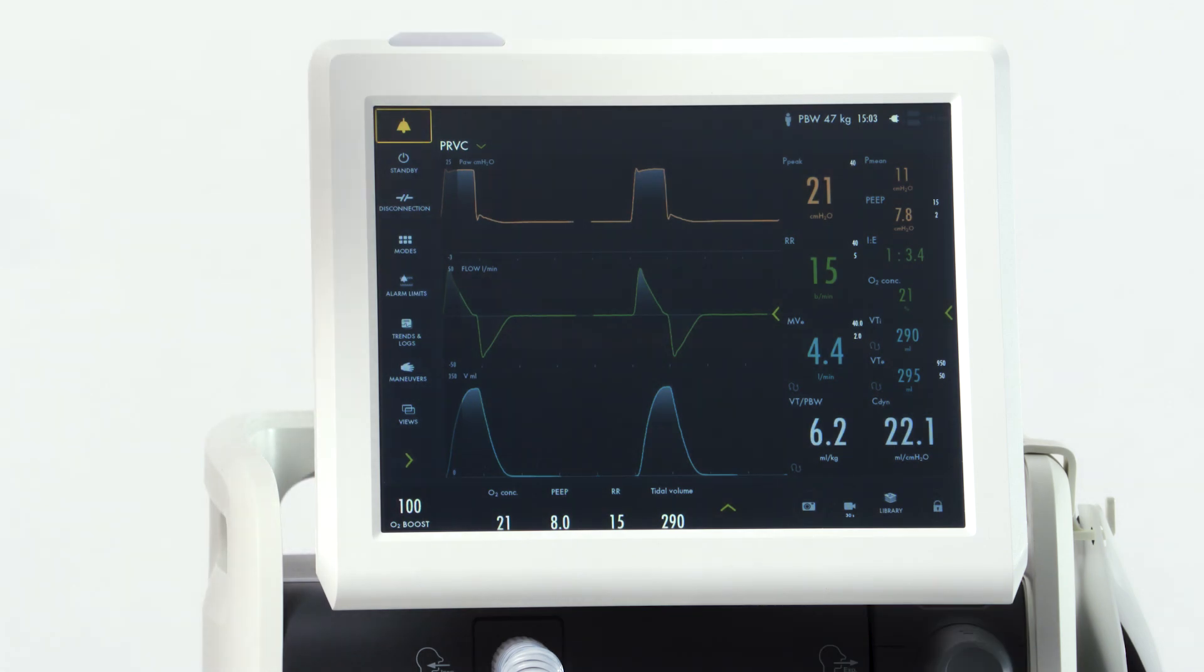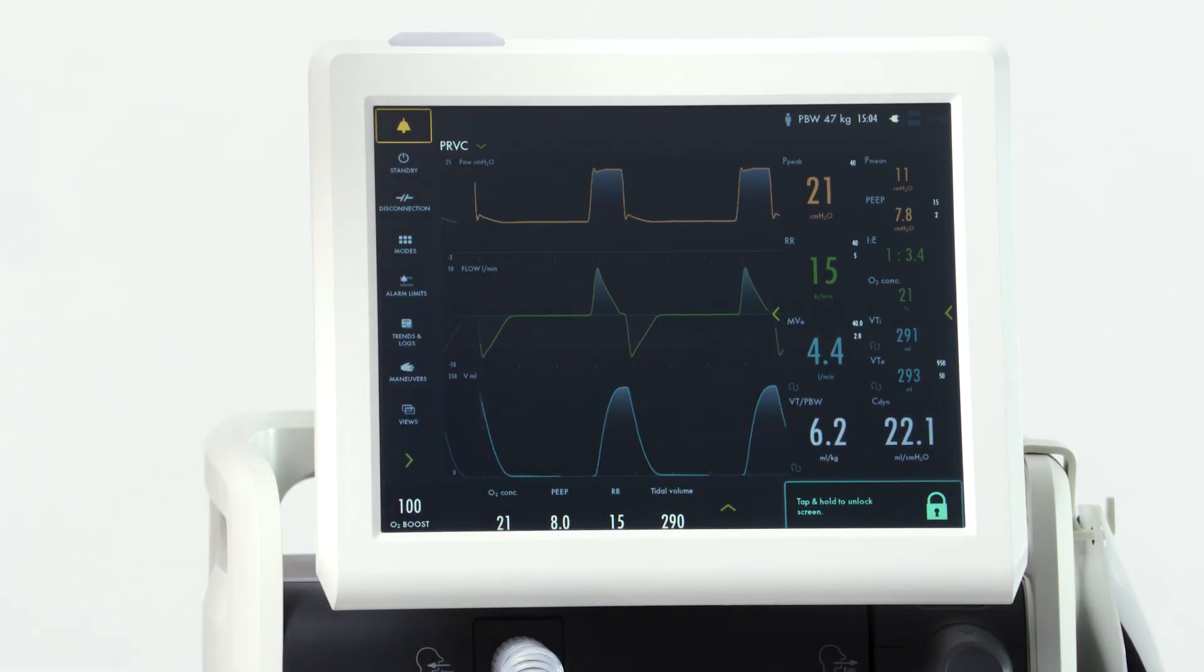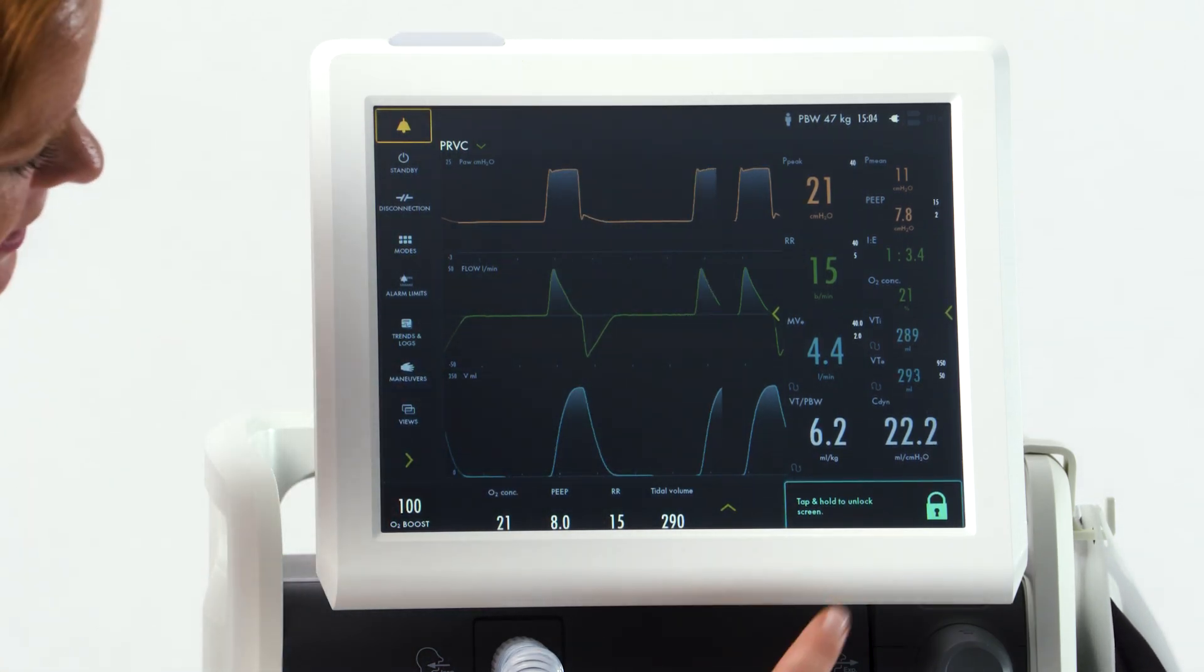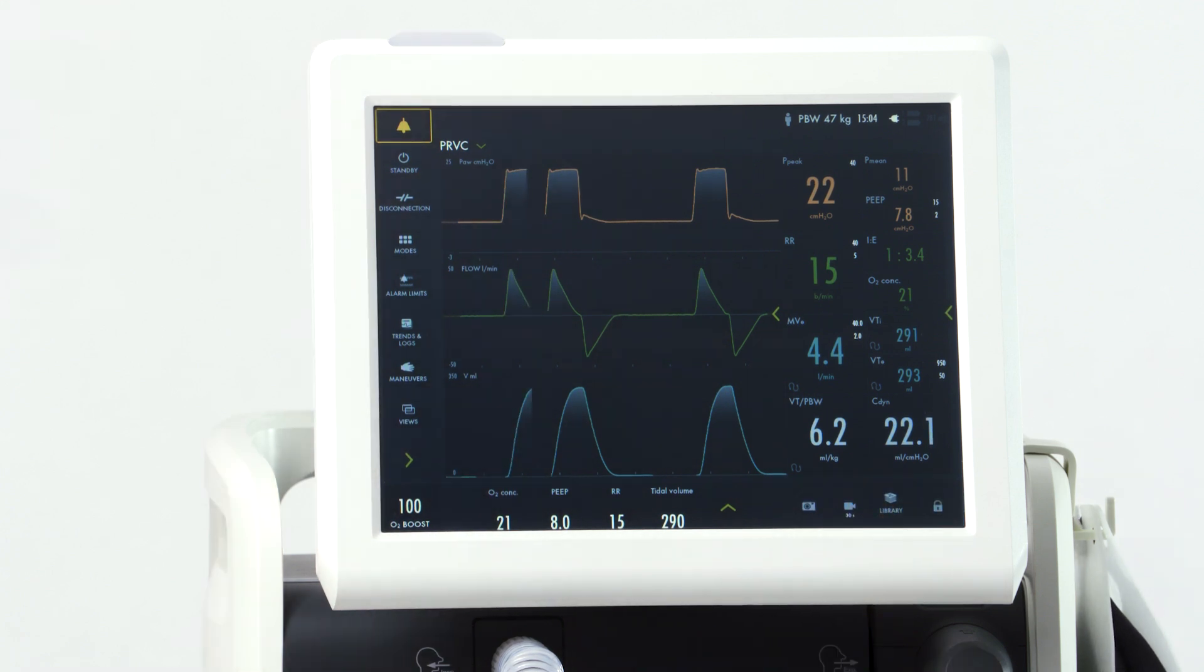To lock the screen, simply press the lock and hit lock screen. This will allow you to clean and use for transport without making changes. To unlock, simply press and hold until the blue bar goes across.